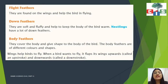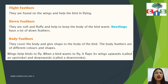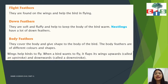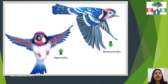Now we will see the pattern in which birds fly. Wings help birds fly. When a bird wants to fly, it flaps its wings upwards — this is called an upstroke — and downward — called a downstroke. Can you see in the image the upstroke, where the wings move in the upward direction? And when the wings move downward, that is the downstroke. With the help of upstroke and downstroke, birds fly in the air.